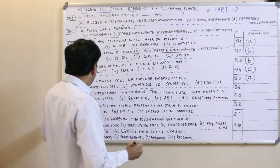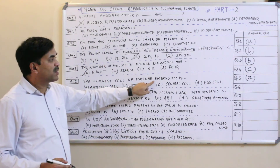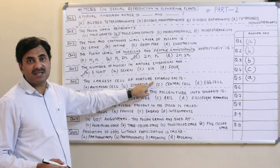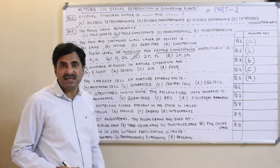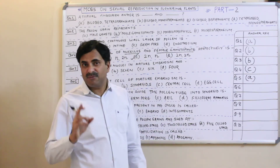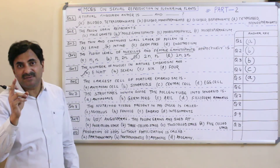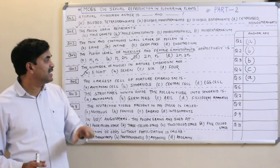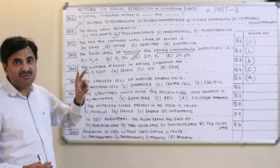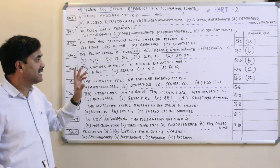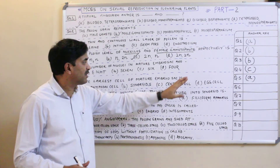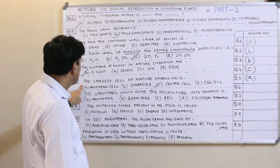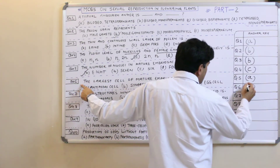Question number six: the largest cell of the mature embryo sac. In the embryo sac there are seven cells total: three antipodal cells, one egg cell, two synergid cells, and one central cell. When we study the diagram of a mature embryo sac, the largest cell is the central cell. Question number six has the answer C.